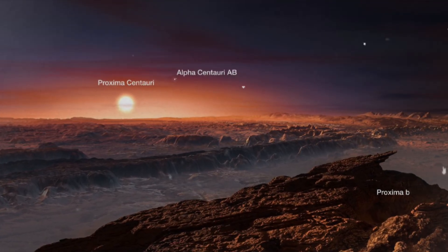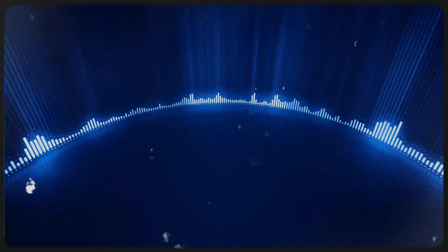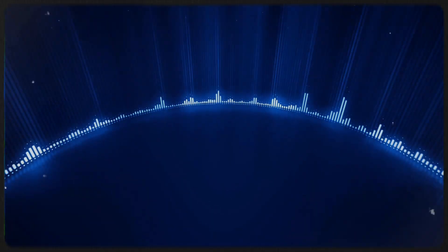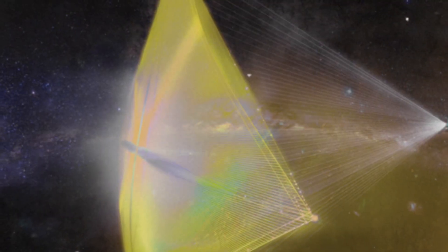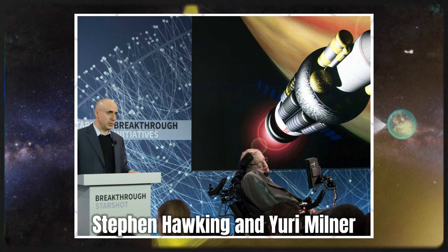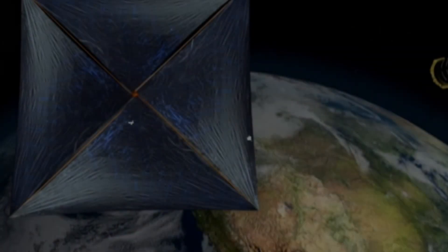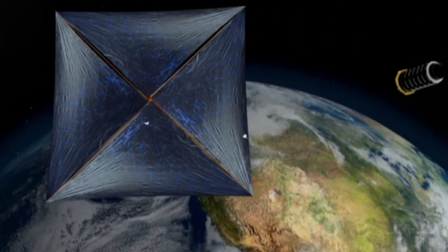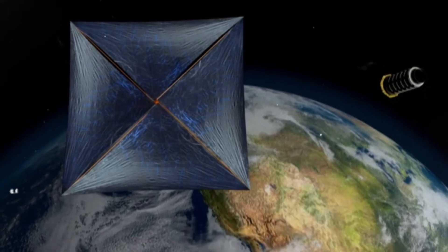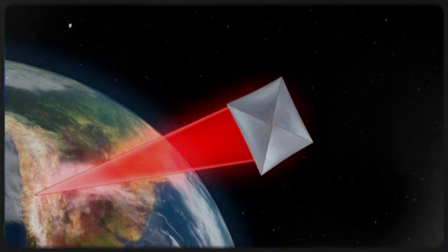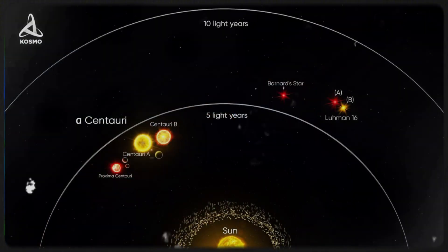The race to reach Proxima Centauri is underway. While the mysterious signal from the star remains unexplained, the idea of traveling to our closest stellar neighbor has shifted from science fiction to a serious scientific pursuit. The Breakthrough Starshot initiative, led by a team of visionary researchers and supported by figures like Stephen Hawking and Yuri Milner, seeks to send miniature, laser-driven spacecraft to the Alpha Centauri system, including Proxima Centauri, within our lifetime.